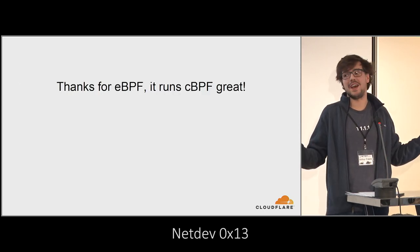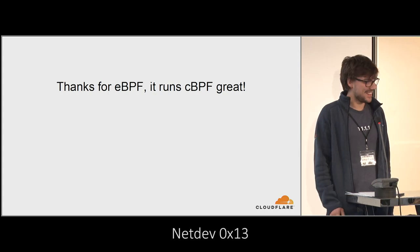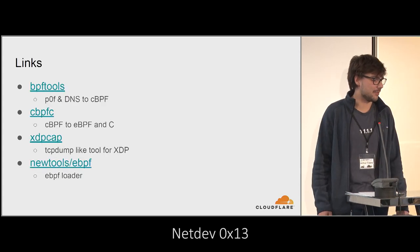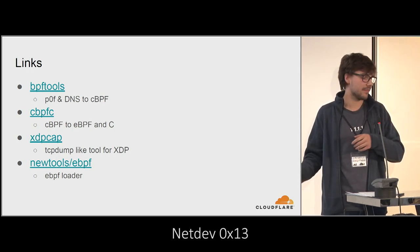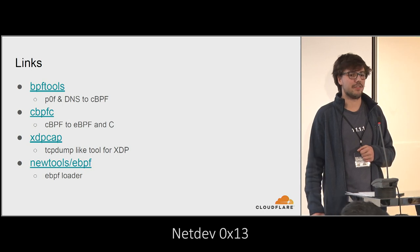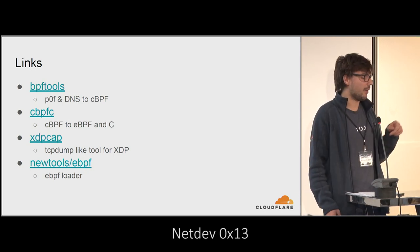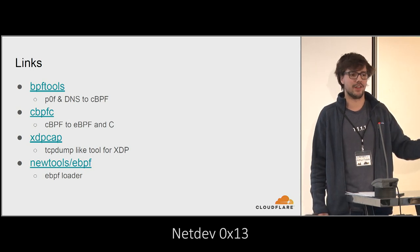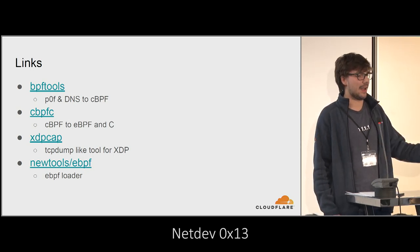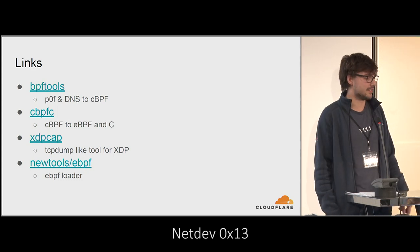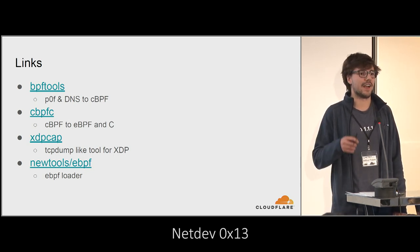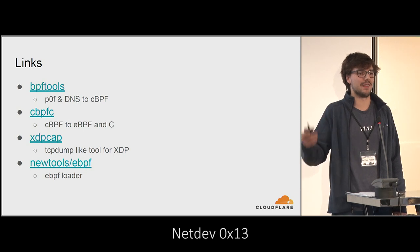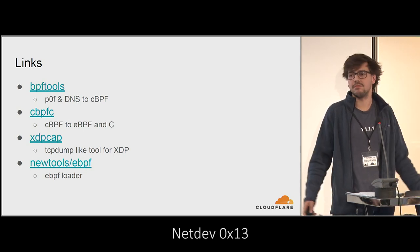Thanks to eBPF, it runs CBPF great. Here are some links to our tools: bpf-tools is our Poff and DNS-to-CBPF compiler used for matching packets while editing rules. cbpf-c is our classic BPF to C or eBPF compiler — not quite open source yet but should be available next week on GitHub. Same for xdpcap, our XDP packet capture tool that uses cbpf-c, which should be open source next week. And gobpf is the loader we use, entirely in Go, that allows runtime ELF modification to enable and disable rules.